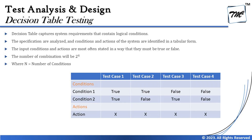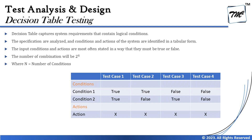This technique certainly depends on detailed requirements, and if you don't have them it may not be applicable. When it comes to decision table testing, it captures system requirements that contain logical conditions. The specifications are analyzed and conditions and actions of the system are identified in tabular form. Input conditions and actions are often stated as true or false — positive or negative, yes or no.